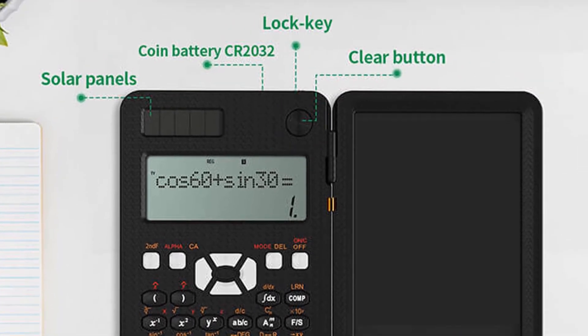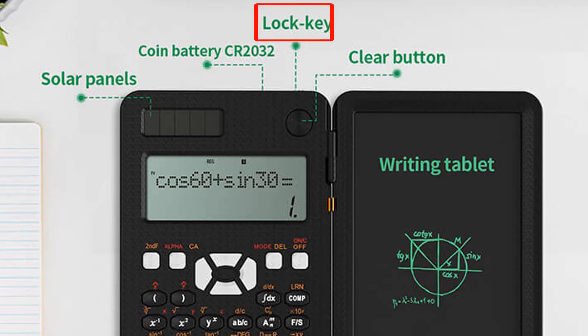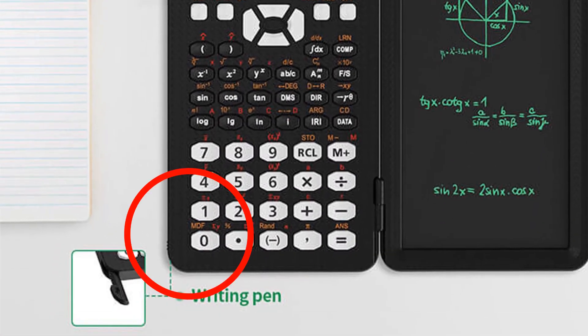Then on top of this calculator we also have the lock key, and what this lock key does is it protects the writing content on the tablet from accidental erase. So if you lock this calculator, then what it means is that all the information you have on the writing board cannot be erased. So if you don't want to lose all the information you have on this writing board, then all you have to do is press on the lock button to lock it.